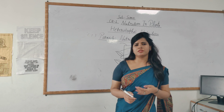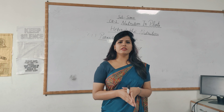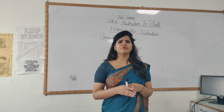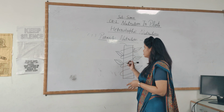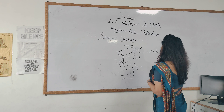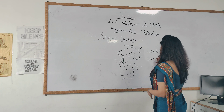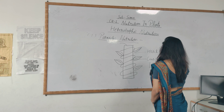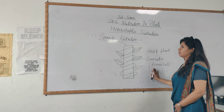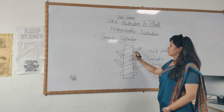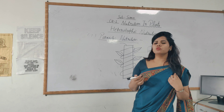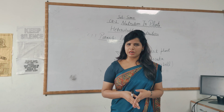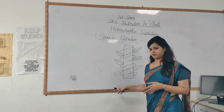Basically, parasites live inside or upon another green plant that is known as the host, and this host will provide nutrition and food to the Cuscuta plant. Here is a host plant, and this one is Cuscuta, that is Amarbel. This Amarbel or Cuscuta will survive upon this host plant. The host plant has chlorophyll and does the process of photosynthesis, so it prepares food. And the food which is prepared by the host plant will be consumed by the Cuscuta Amarbel.